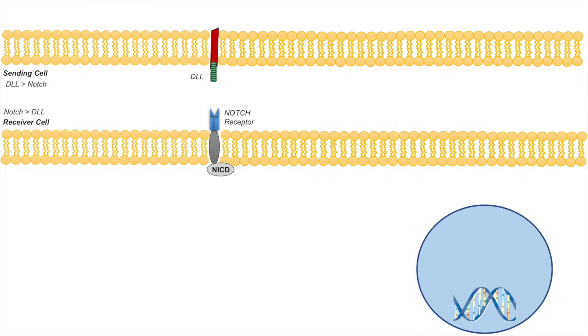The notch receptor has three components. One of them is an extracellular component, which is the notch extracellular domain, and that portion of the receptor is what binds to the ligand. It's what binds to the delta-like ligand or the jagged protein. There's also a notch intracellular domain, the NICD. And the third component is the transmembrane component, which attaches the extracellular and intracellular domains together.